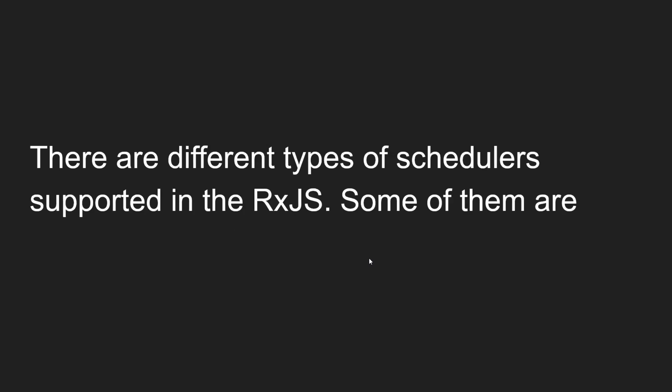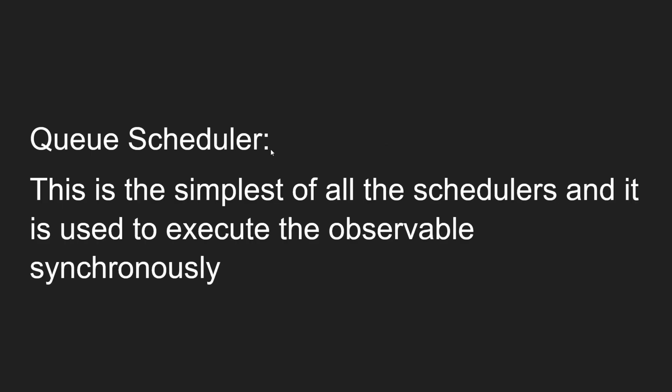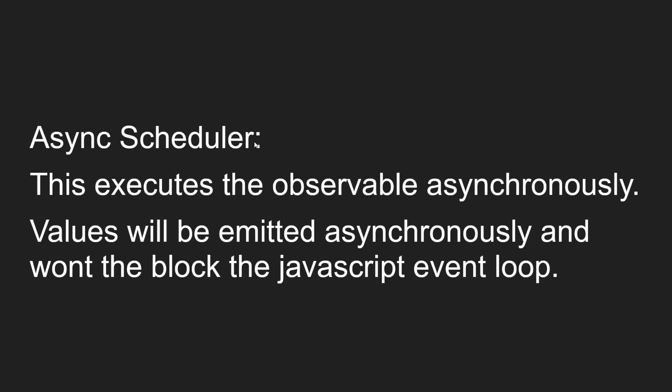In RxJS there are different types of schedulers supported. Let's look at the most commonly used ones. The first is the queue scheduler — this is the simplest of all schedulers. It is used to execute the observable synchronously. After completion of this observable, only then will it go to the next line.